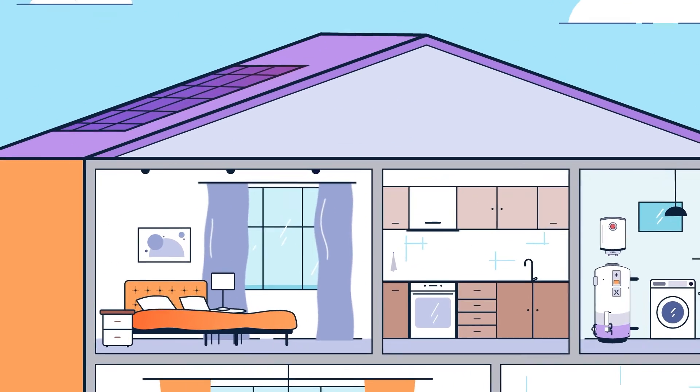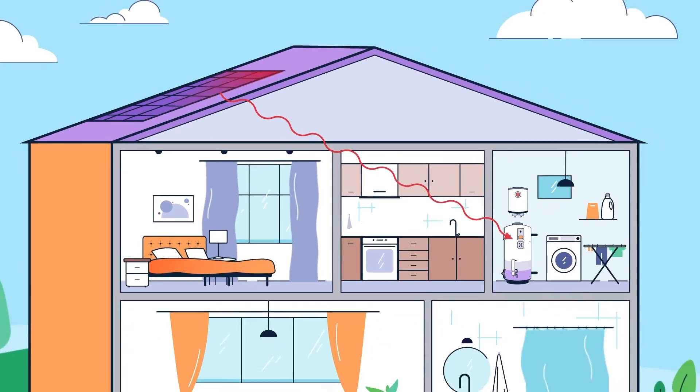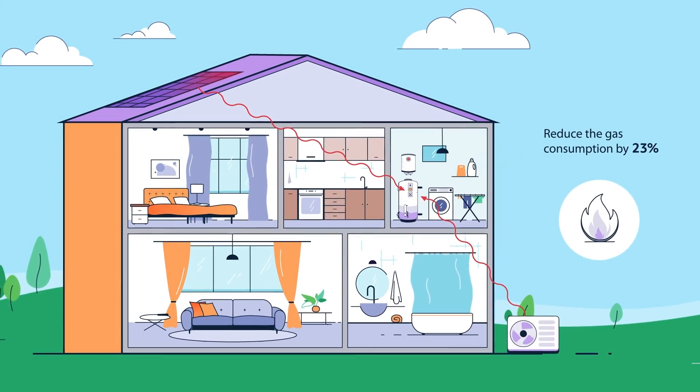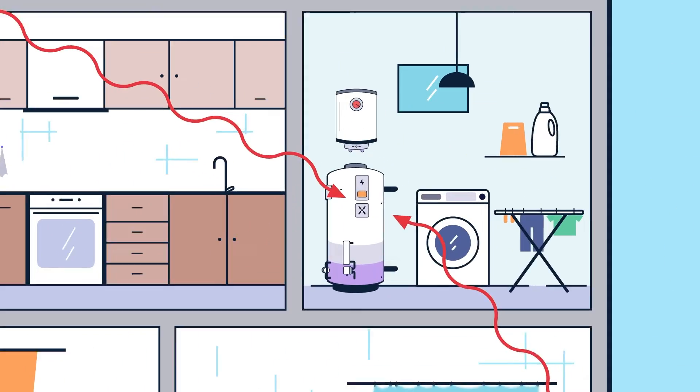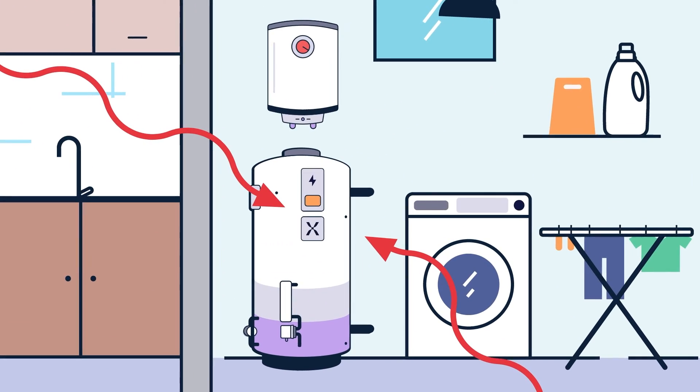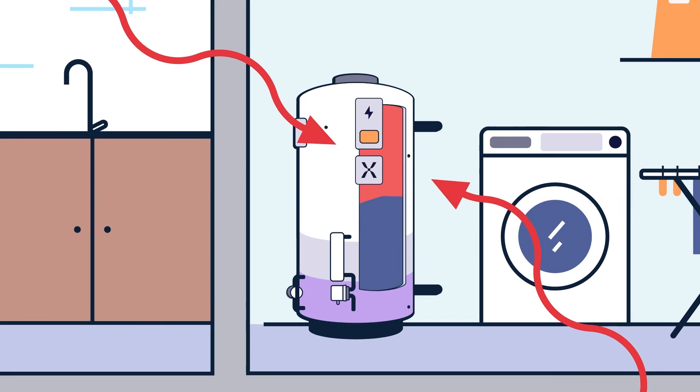The same tank can also connect to solar PV and or a heat pump, delivering even more energy savings. So when the home is ready to transition away from gas completely, the same Mixergy tank will still be there.